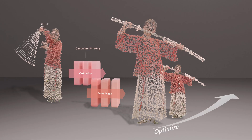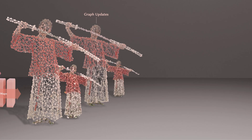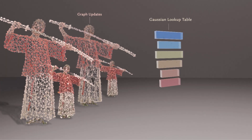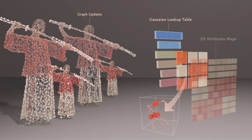Photometric cues help filter out occluded but well-reconstructed regions, preventing false detections. The surviving candidates are then integrated into the reference motion Gaussians. Each motion Gaussian acts as an anchor, deriving and activating a set of appearance Gaussians to capture detailed textures. To facilitate seamless integration into codec-based volumetric formats,